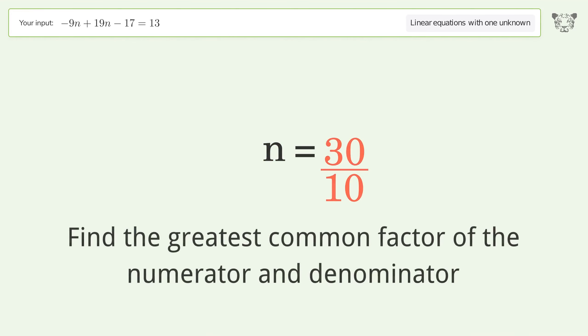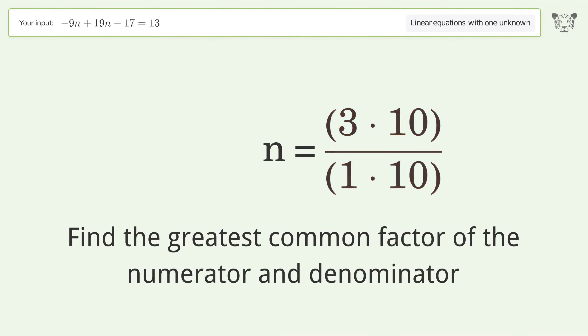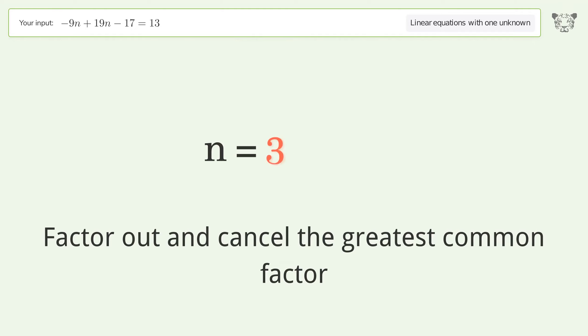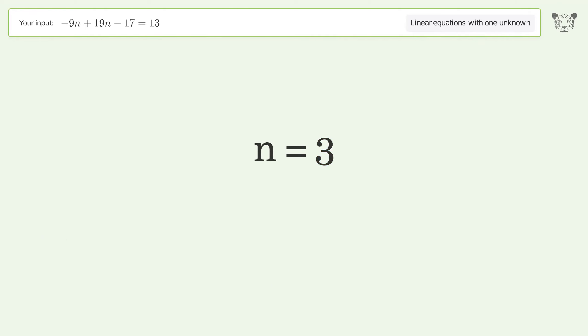Find the greatest common factor of the numerator and denominator. Factor out and cancel the greatest common factor. And so the final result is n equals 3.